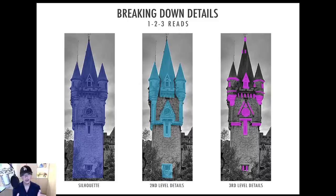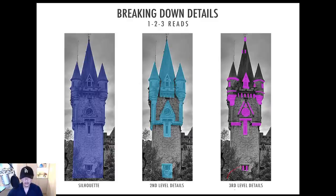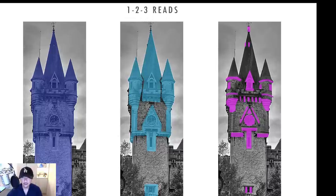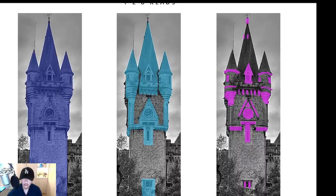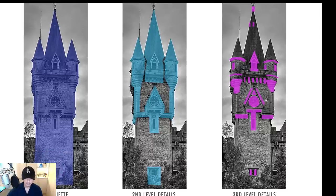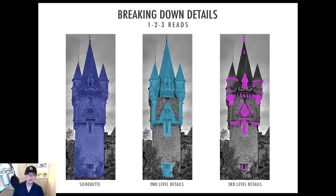Second level details — like the side towers, clock tower, windows — break out the silhouette. If you took those away, this tower wouldn't be a tower anymore. Students often put all their secondary details within the silhouette so you can't actually see them. The takeaway: your second level details help construct the actual silhouette. Third level details exist within the second level details; they help refine that extra level of finish but don't contribute to the overall average of the silhouette.